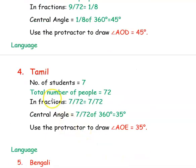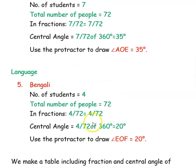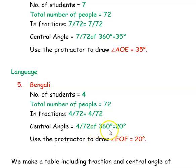The next language is Tamil, spoken by 7 students. The fraction is 7 divided by 72. The central angle is 7 divided by 72 into 360 degrees, which is 35 degrees. The next language is Bengali, spoken by only 4 students. The fraction is 4 divided by 72. The central angle is 4 divided by 72 into 360 degrees, which is 20 degrees.